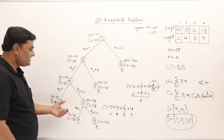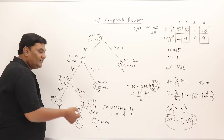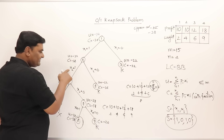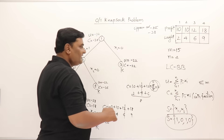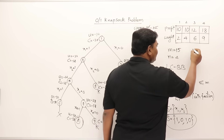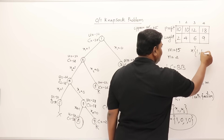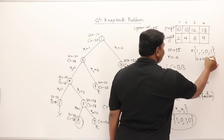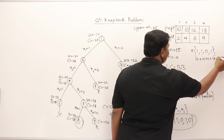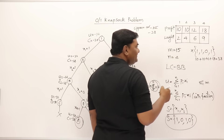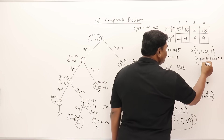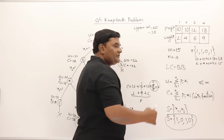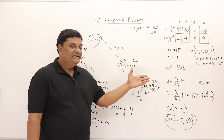Almost all nodes are killed. The last remaining alive node is the answer node. The solution is: first object included, second object included, third object not included, fourth object included. Total profit = 10 + 10 + 0 + 18 = 38, which is the maximum profit. Total weight = 2 + 4 + 0 + 9 = 15. This is the solution, solved using least cost branch and bound method.